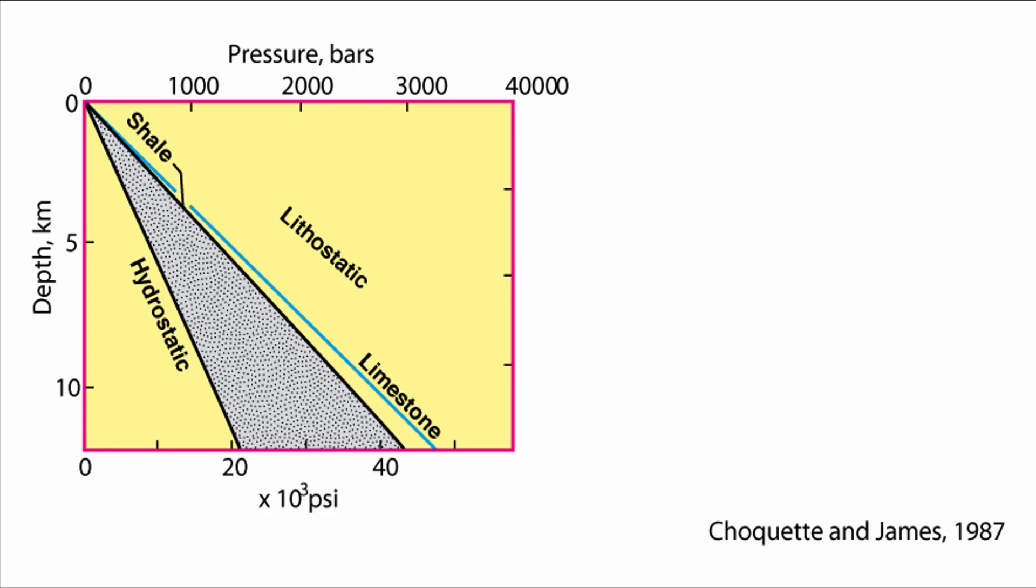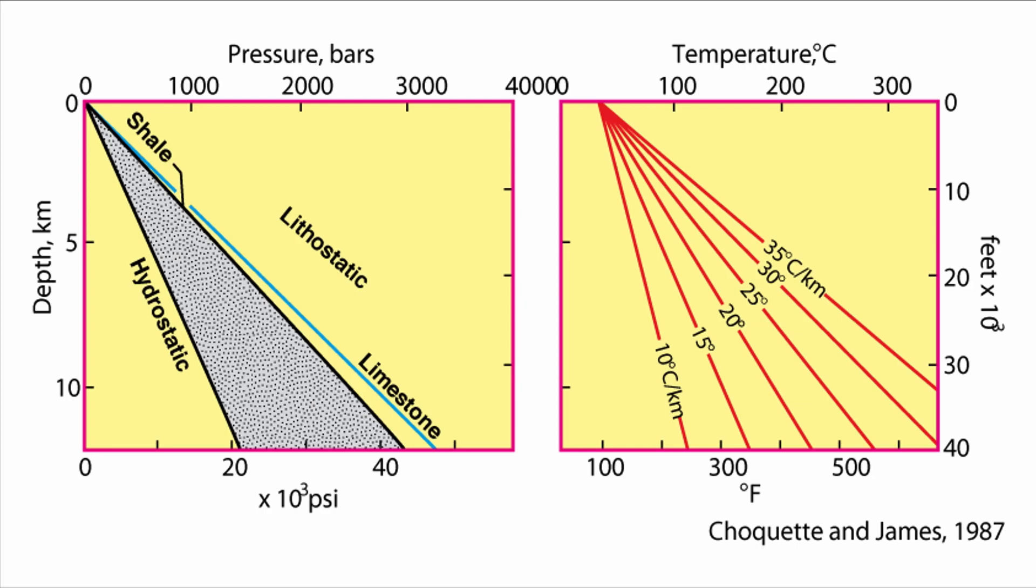The second thing that also changed with burial is temperature. The subsurface is characterized by an increase in temperature and how much temperature increase is a function of the geothermal gradient. That geothermal gradient can range vastly between 10 degrees per kilometer all the way to 35 or even more degrees per kilometer.